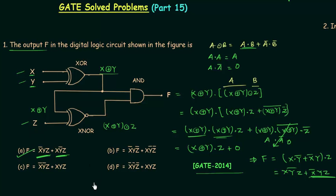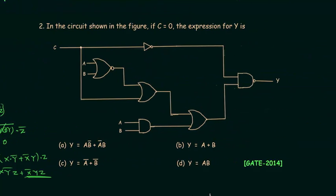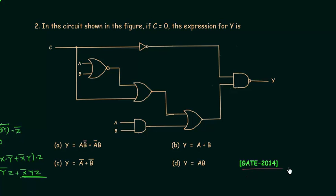Now we move to the second problem, also from the GATE 2014 paper. In this problem, a, b and c are three inputs and we have to find the output y given that c = 0.